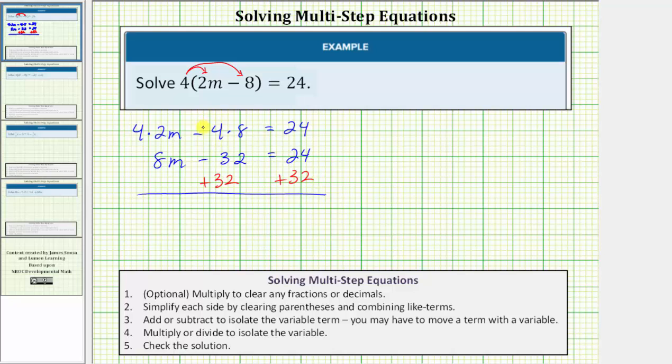Minus 32 plus 32 is zero, so the left side simplifies to eight m. So we have eight m equals 24 plus 32 is equal to 56.